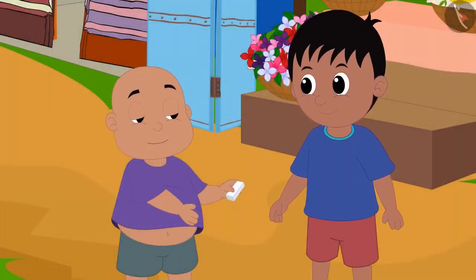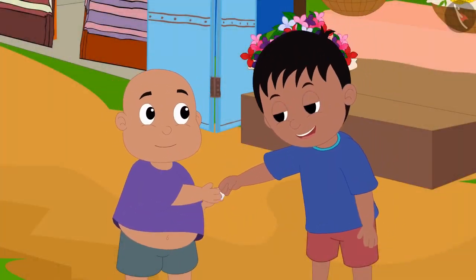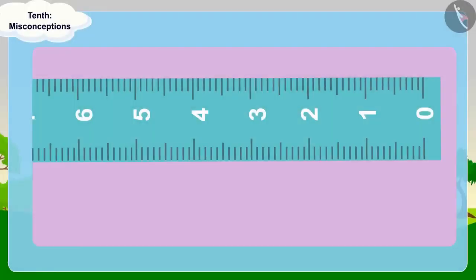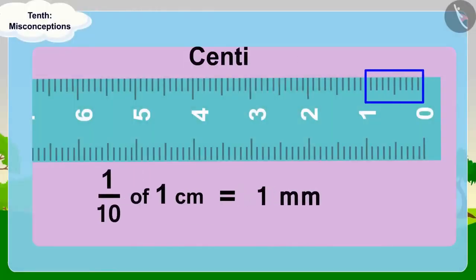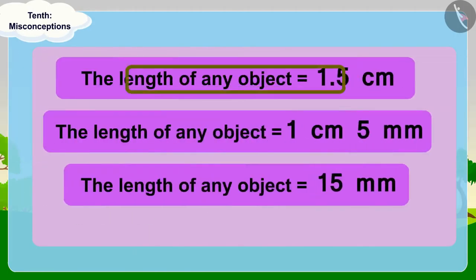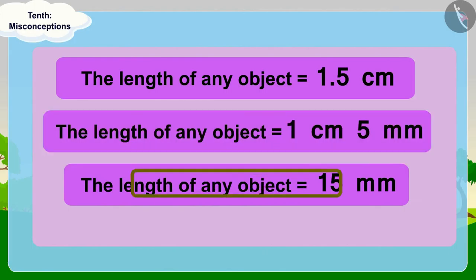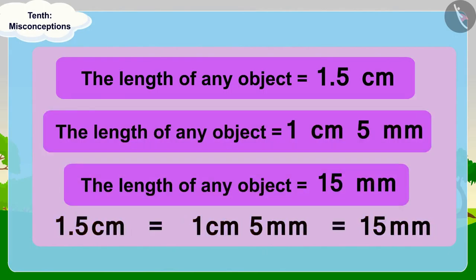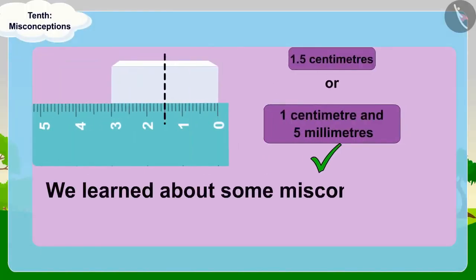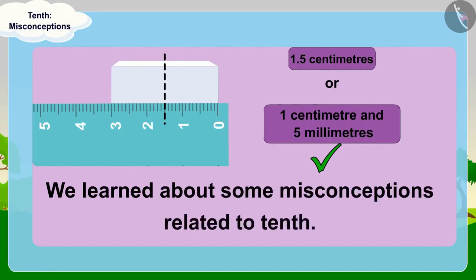Raju and Babalu split the eraser in half. Children, because millimetre is one tenth of a centimetre, we can write the length of any object in these three ways and it is exactly the same. In this video, we learned about some misconceptions related to tenth.